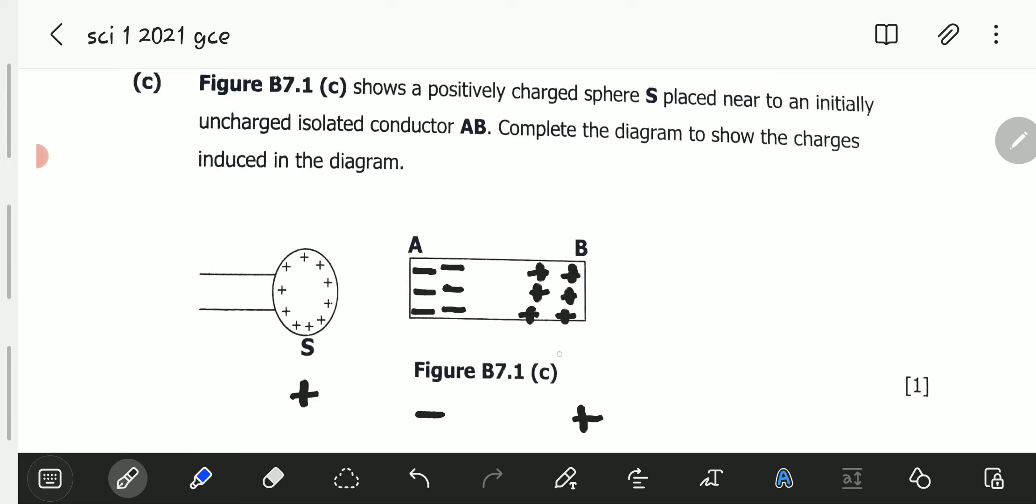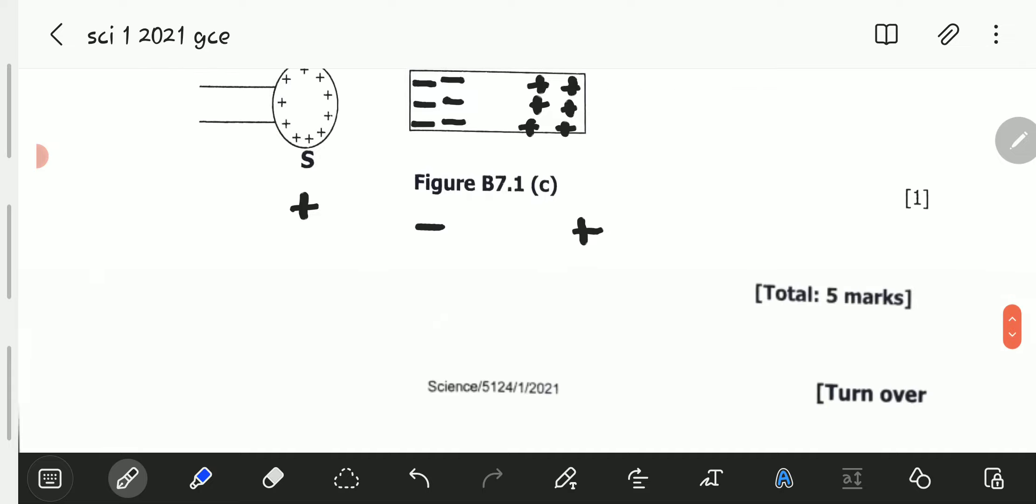If the number of negatives is not the same as the number of positives, it means that the charge distribution is wrong, and therefore the net charge of the whole object will also be wrong. You cannot just write a single negative and a single positive—that means you're just showing the net charges of the two poles. But here, you're looking at charge distribution.